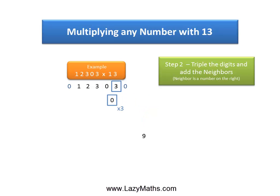Taking the next pair 0 and 3, triple of 0 is 0 plus the neighbor 3 gives us a 3.